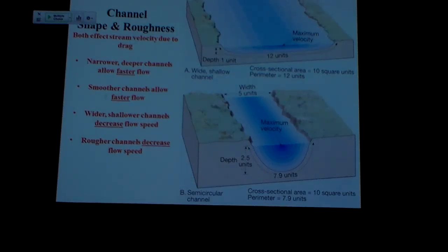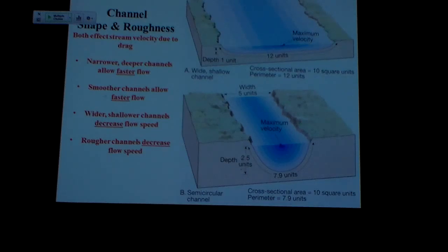Following up on this idea of friction along the bank — if the bank is smooth, there's going to be less friction. But if it's rocky and rugged, there's going to be a lot of friction, and that's going to induce turbulence into the water, which is going to decrease the efficiency of the flow. So by all means, these U-shaped channels that are smooth are going to be the most efficient.